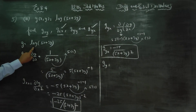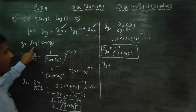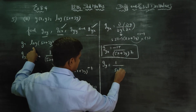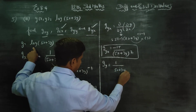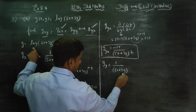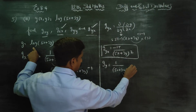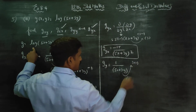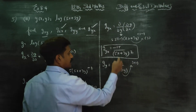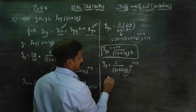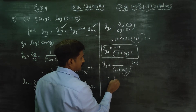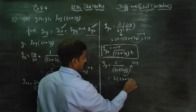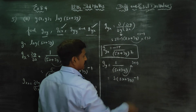Now finding gy. Differentiate log: gives 1 by (5x plus 3y). By chain rule, differentiate with respect to y: 3 into 1. So the answer is 3 by (5x plus 3y).